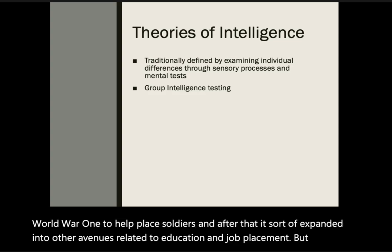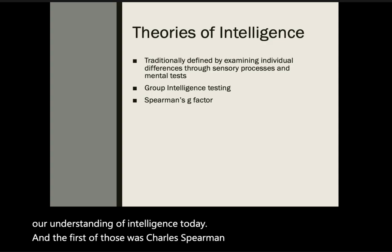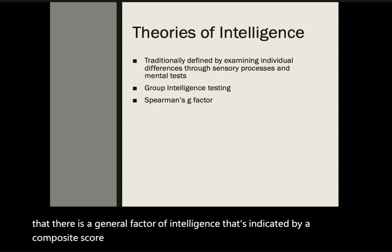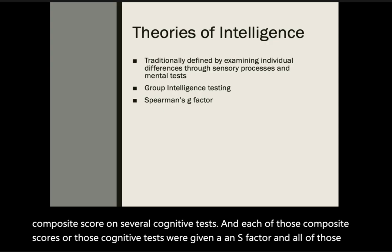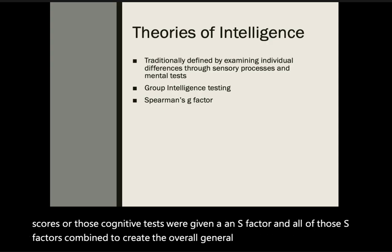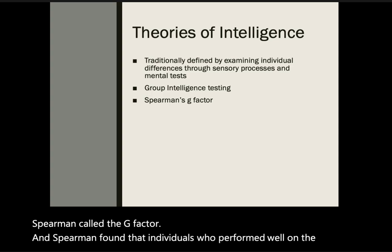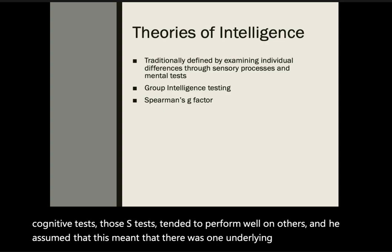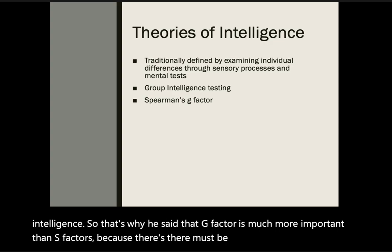There were also some theories of intelligence that really form our understanding of intelligence today. The first was Charles Spearman's G factor, which assumes there is a general factor of intelligence indicated by a composite score on several cognitive tests. Each cognitive test was given an S factor, and all of those S factors combined to create the overall general intelligence factor — the G factor. Spearman found that individuals who performed well on one cognitive test tended to perform well on others, leading him to conclude there was one underlying factor of intelligence.